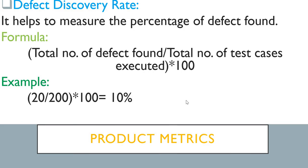Defect discovery rate helps to measure the percentage of defects found for any specific release or regression. The formula is: total number of defects found divided by total number of test cases executed, multiplied by 100. For example, 20 defects found out of 200 test cases executed gives a defect discovery rate of 10%. It's good comparative data alongside your pass and fail rates — it shows how is your defect discovery rate.